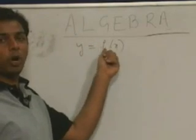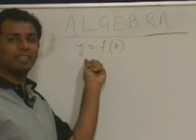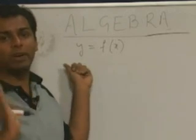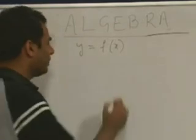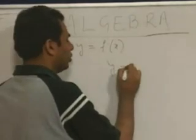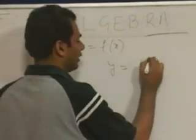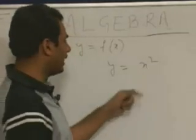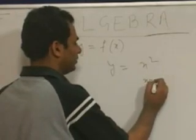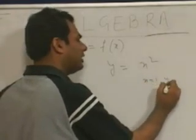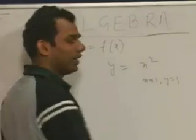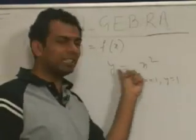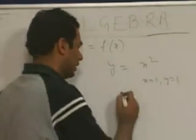For one value of x, there should be only one value of y — there cannot be two values of y. For example, if I say y equals x squared and I put x equal to 1, I get only the value y equal to 1. So we can say that this is basically a function.